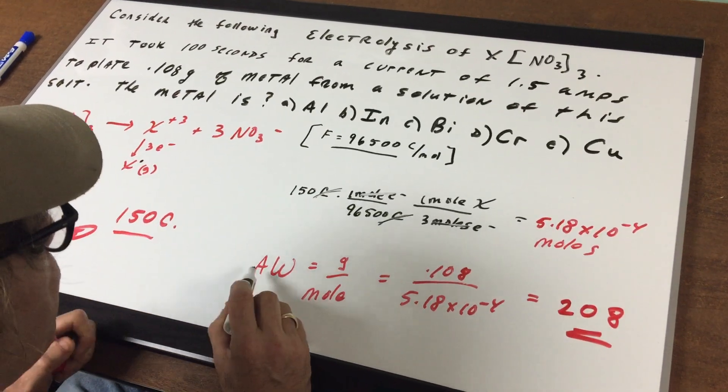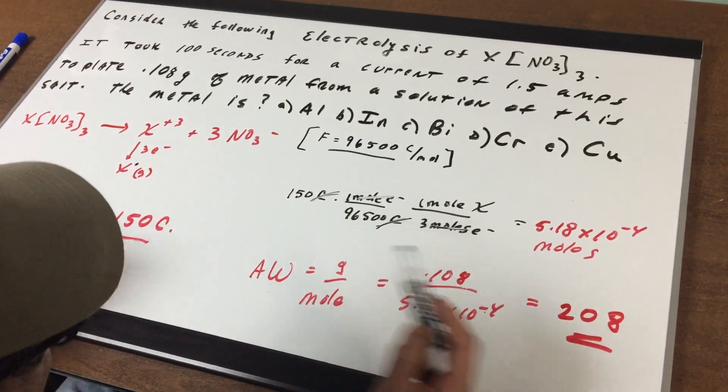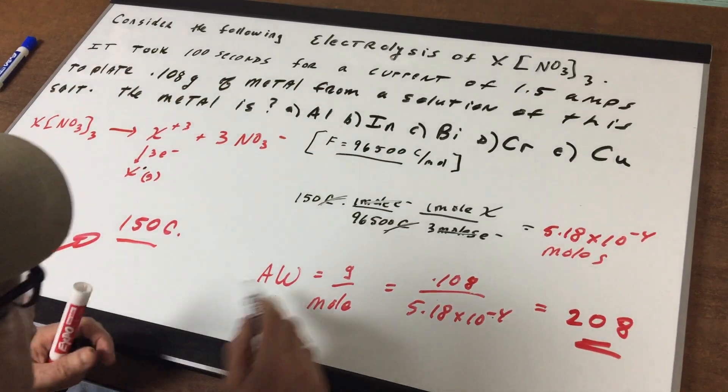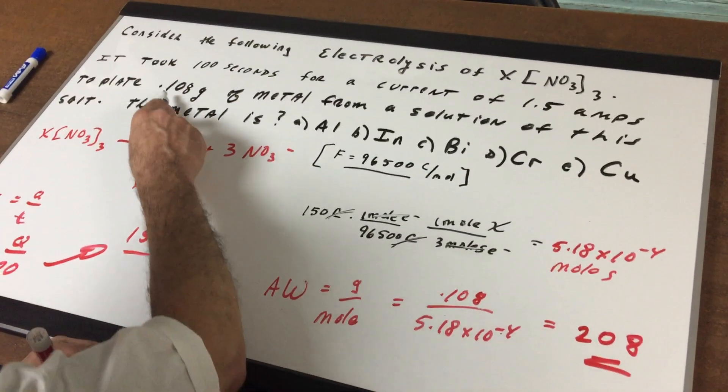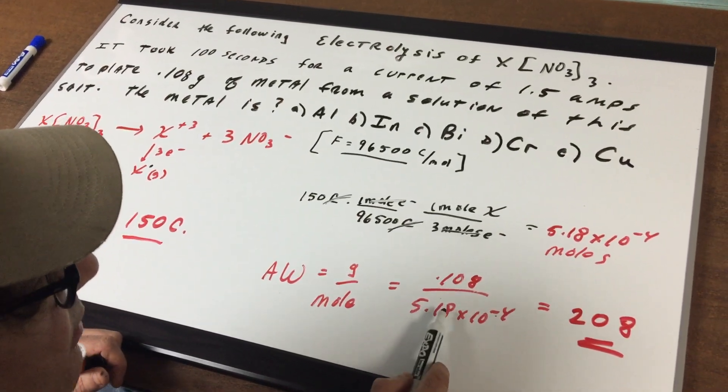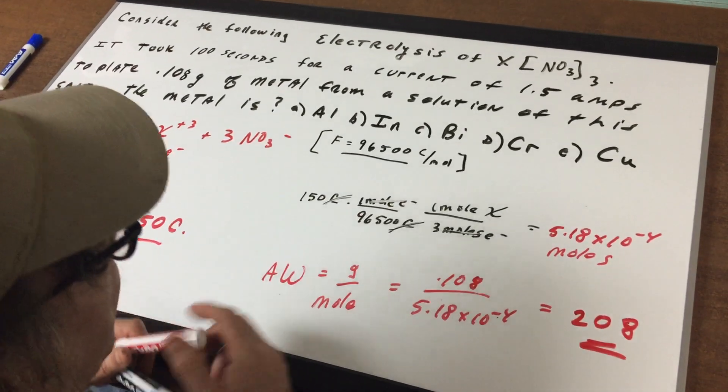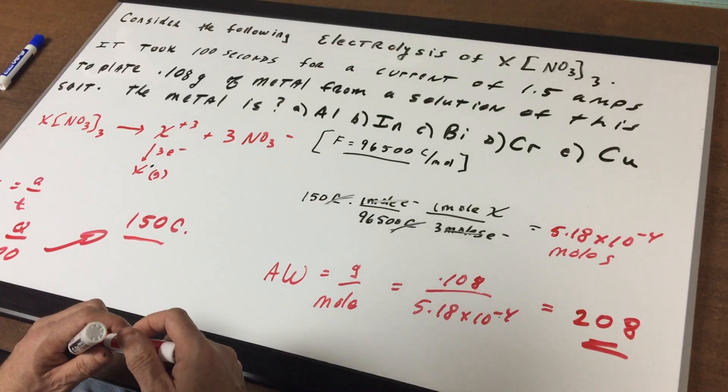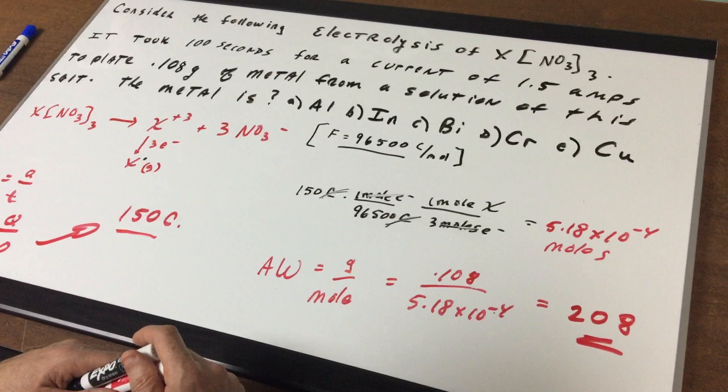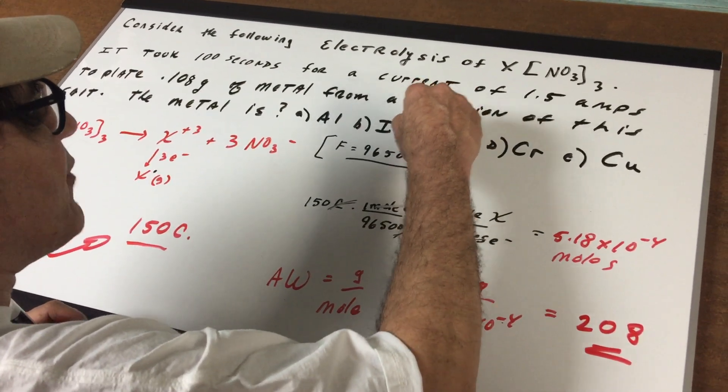Now what? The atomic weight equals grams over moles. The molecular weight of something also equals grams over moles, but since we're talking an individual species, we say atomic weight. The number of grams was 0.108. The moles we just worked so hard to get. And that gives me 208. So what I'm going to do is I go to the periodic table and I see which one of these elements is closest to 208. I'm looking at a periodic table now and bismuth is 209, which is almost exactly on top of it.